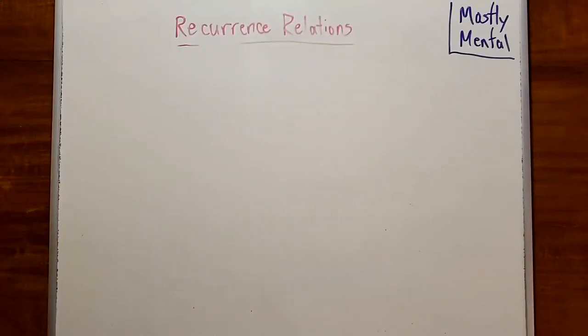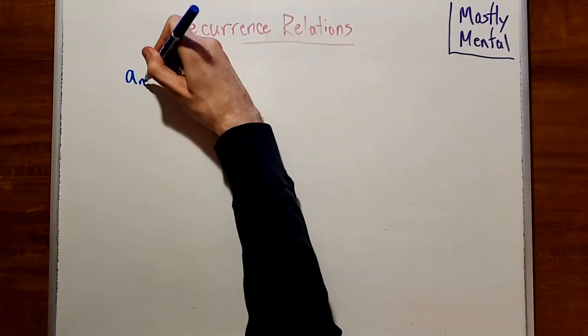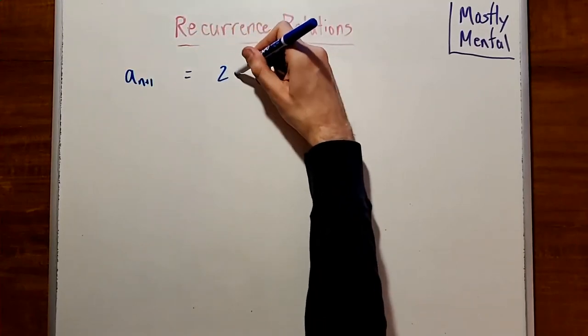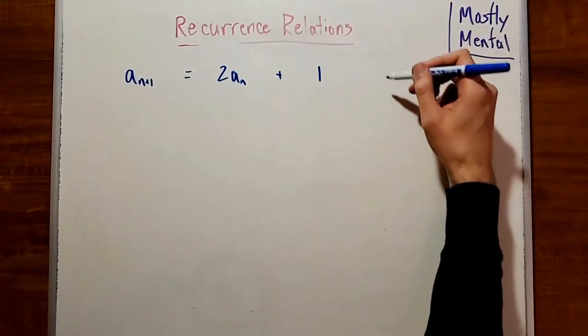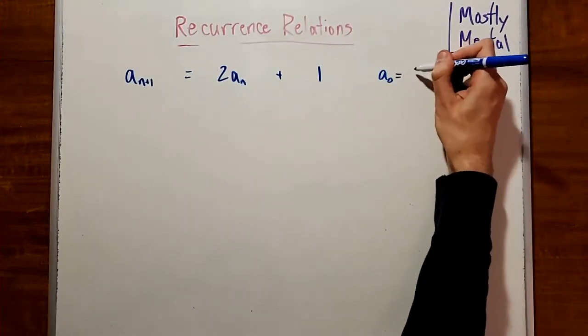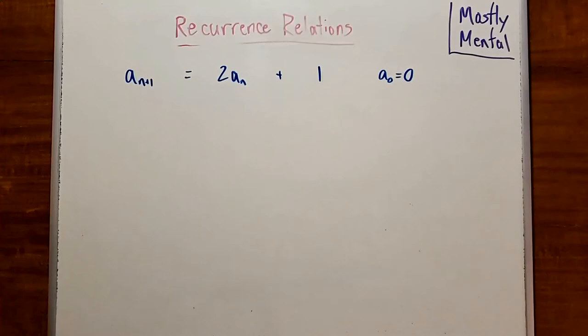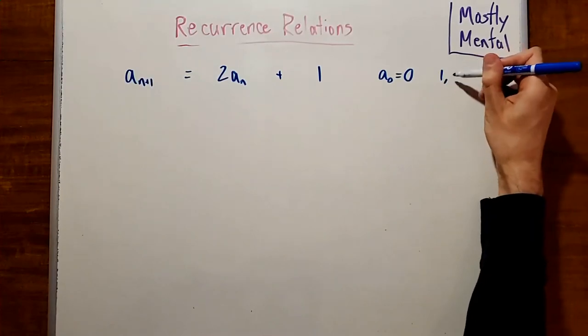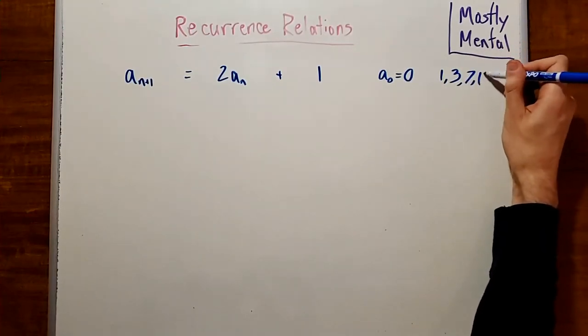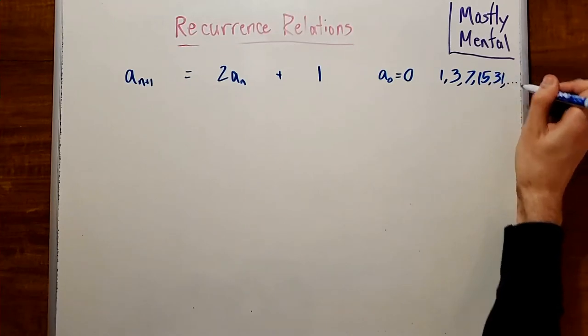Consider the recurrence a_{n+1} equals 2a_n plus 1, where a_0 is 0. If we compute the next few terms, we get 2 times 0 plus 1 is 1, then 2 times 1 plus 1 is 3, 7, 15, 31, and so on.